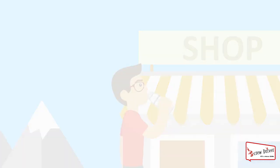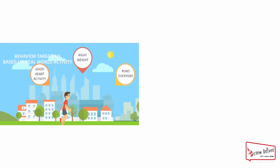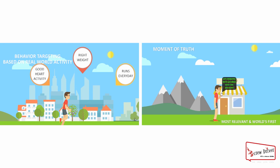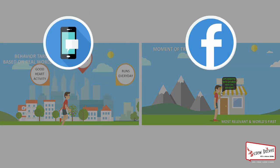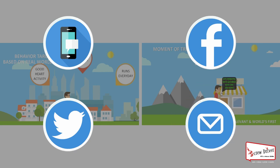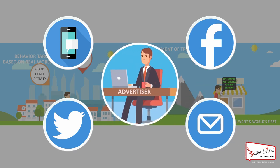With sharper and accurate targeting parameters through Internet of Things, and by reaching the users at their moment of truth on multiple platforms, mobile app, Facebook, Twitter, and email will ensure a definite increase in ROI for advertisers.